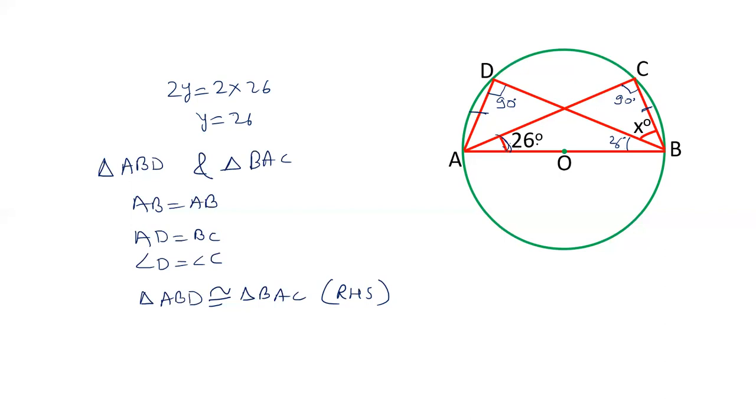Triangles ABD and BAC are congruent by RHS (right angle, hypotenuse, side) congruency theorem. And therefore, angle BAC equals angle ABD by CPCTC, corresponding parts of congruent triangles. BAC is given as 26 degrees, so angle ABD is also 26 degrees. So these are the two different methods by which we can prove the value of angle ABD is 26 degrees.